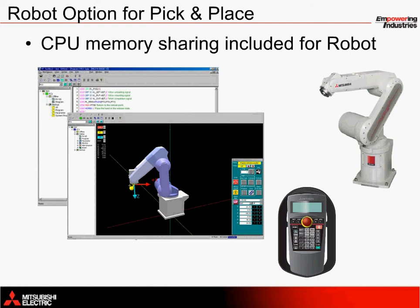The robot option at the end of the filling line has been provided as an option to remove containers from the filling line. This vertically articulated IQ Platform robot integrates nicely with the PLC and motion controller. A template for setting up the parameter settings for memory sharing is included in the detailed application note, along with a description of some of the common programming commands in RT Toolbox 2. An illustration of the teaching pendant, the R32TB, is also shown here as well as some of the screenshots for the RT Toolbox 2 software.